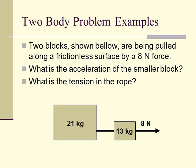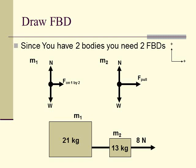Here's a good problem: two objects tied together by a rope, and the front object is being pulled forward with an 8-Newton force. This is very similar to the tugboat problem — this is the tugboat and this is the giant barge. They want us to find the acceleration of the smaller block and the tension in the rope. The first thing we're going to do is draw our two free-body diagrams.